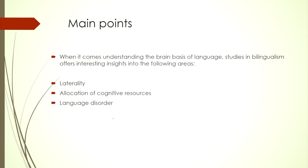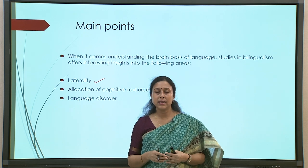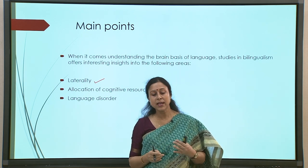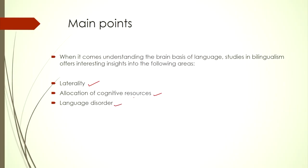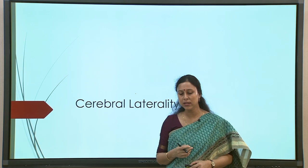There are some other related areas as well, but the primary areas when we look at the bilingual brain are: first, the study of laterality — where in the brain a particular function is located, which sounds simpler than it actually is. Second is the allocation of cognitive resources — how much neural energy or what cognitive apparatus like attention and executive control are necessary for L1 versus L2. And third, language disorder has been a very important domain to study in this regard.